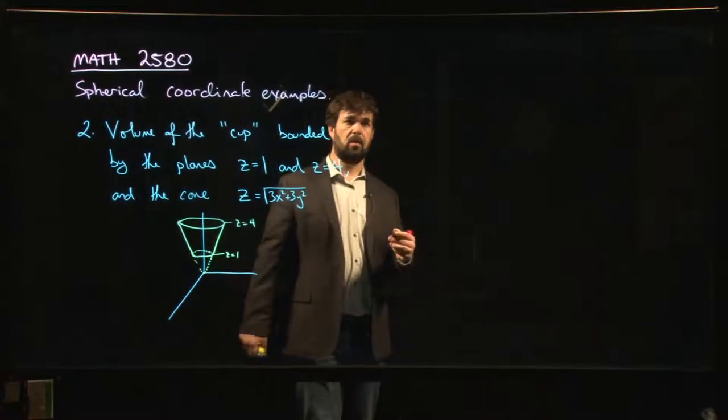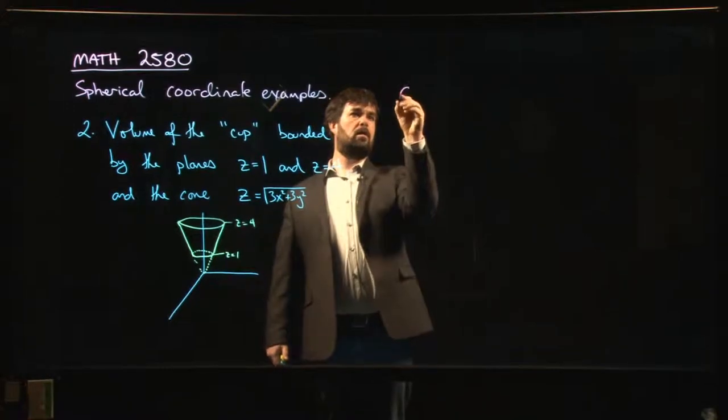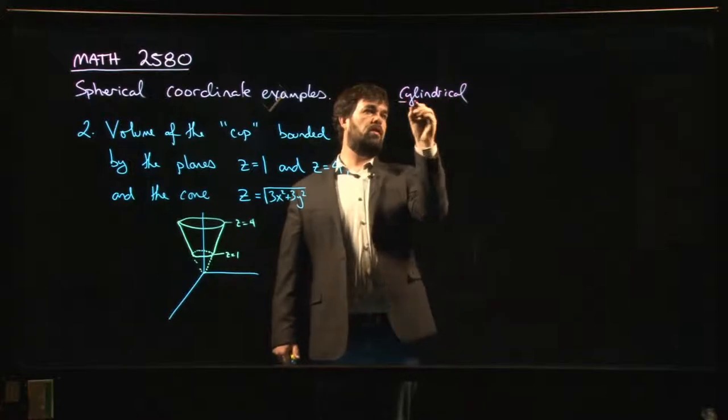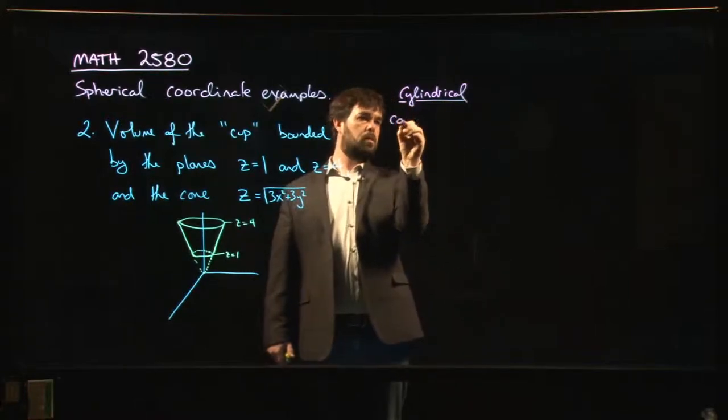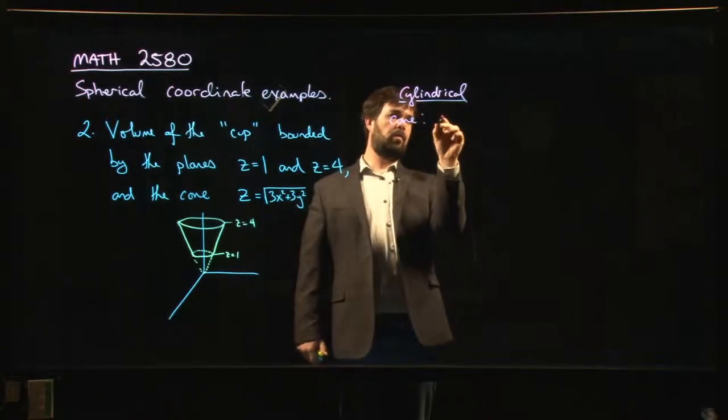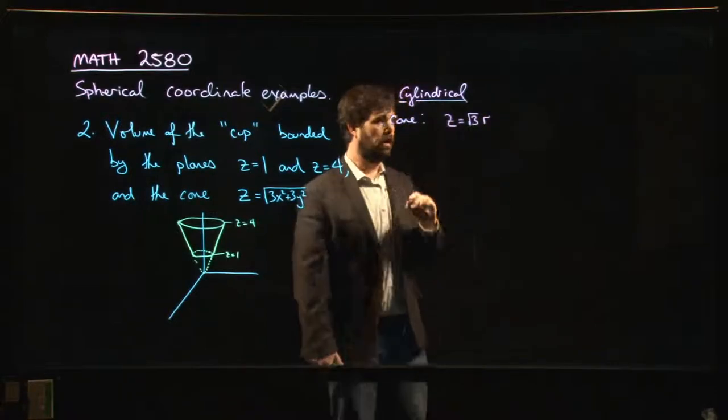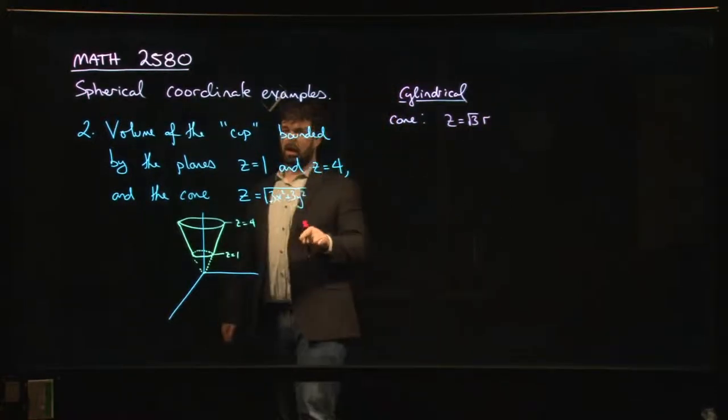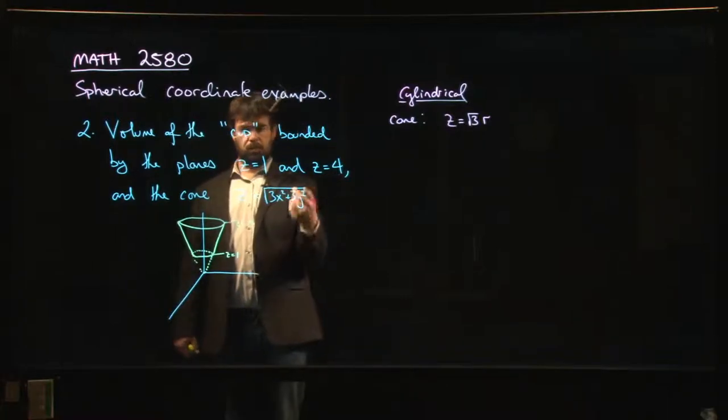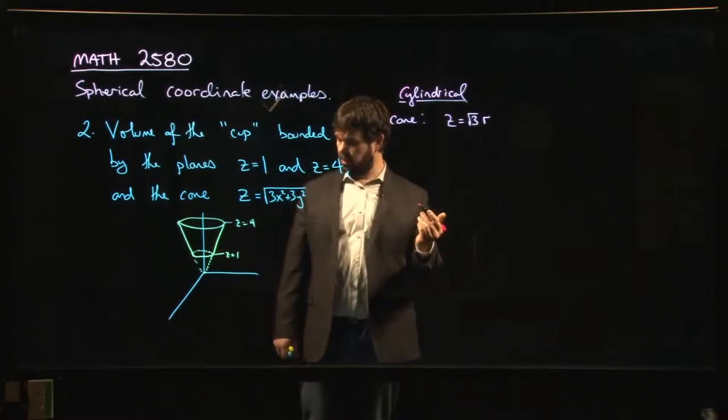So in cylindrical coordinates, let's think about what we would have. In cylindrical coordinates, our cone becomes simply z equals root three times r, right? X squared plus y squared is r squared, so this is three r squared under the square root. We take the square root, we get root three times r. That's all well and good.